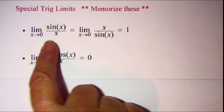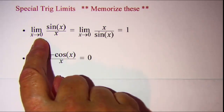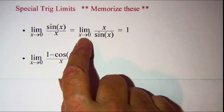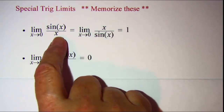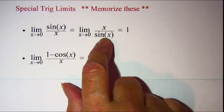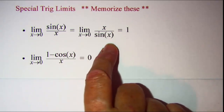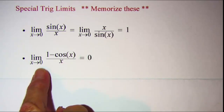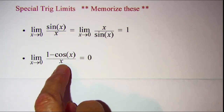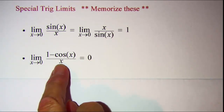Our first trig limit is the limit of sine x over x as x approaches 0, or we could write that as the limit of x over sine x as x approaches 0, and this is equal to 1. Notice that the denominator is the same as the argument of the sine function — that's important to remember. Our second trig limit is the limit as x approaches 0 of 1 minus cosine x over x, where again the denominator is the same as the argument, and that limit is 0.